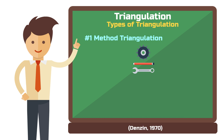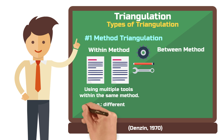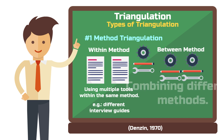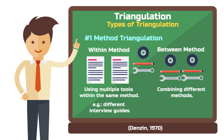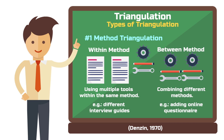Denzin, the father of triangulation so to speak, even distinguishes between within-method and between-method triangulation. Within-method triangulation could involve using two different interview guides to loosen the constraints of methodological decisions when creating a qualitative research design. Between-method triangulation would involve adding a second method — for example, you could distribute an additional online questionnaire to employees of a company that you have previously interviewed, or evaluate the user data of a system they used.